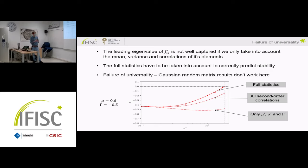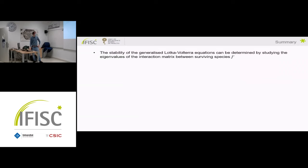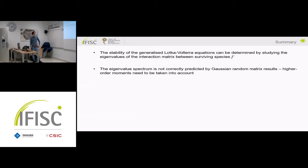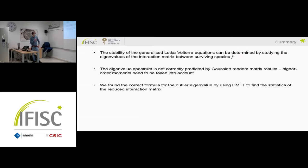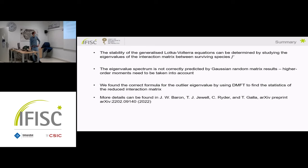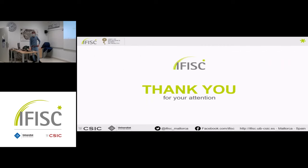This is a quite nice non-contrived example where universality doesn't work — we're not using any pathological distributions, it simply fails in this example. To summarize: we studied stability of the generalized Lotka-Volterra equations by studying eigenvalues of the interaction matrix between surviving species. The eigenvalue spectrum is not correctly predicted by Gaussian random matrix results; higher-order moments must be taken into account. The correct formula for the outlier eigenvalue was found using dynamic mean field theory to compute statistics of the reduced interaction matrix. This is available in an arXiv paper published earlier this year.